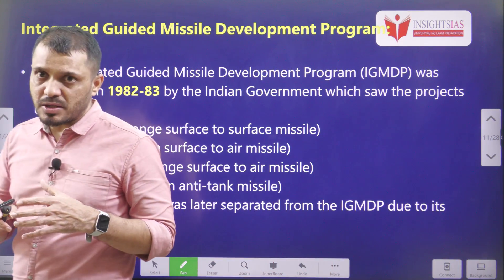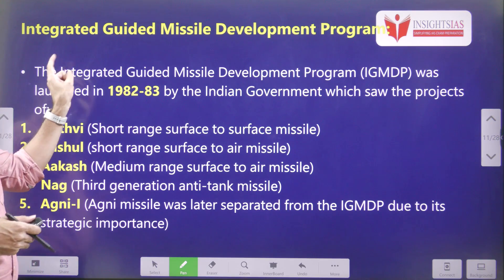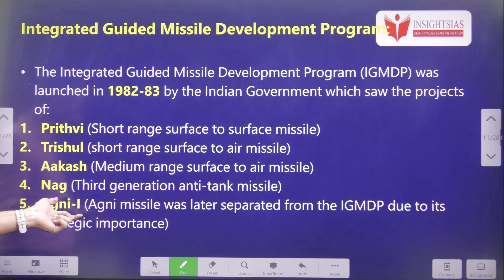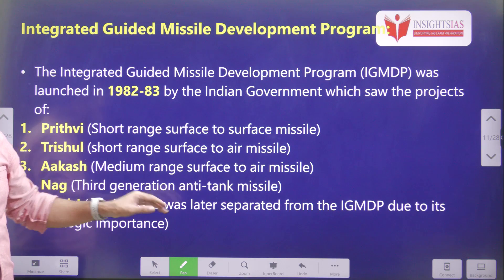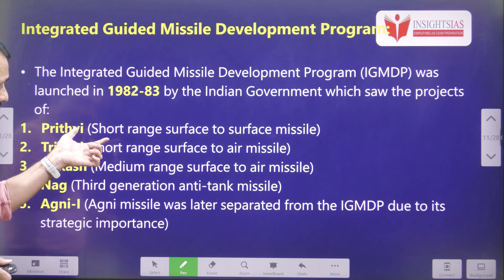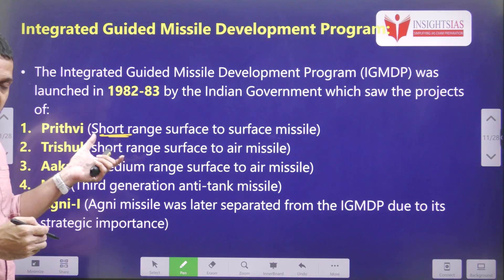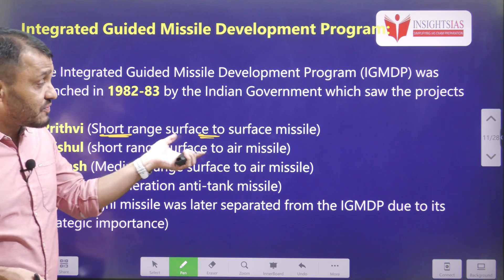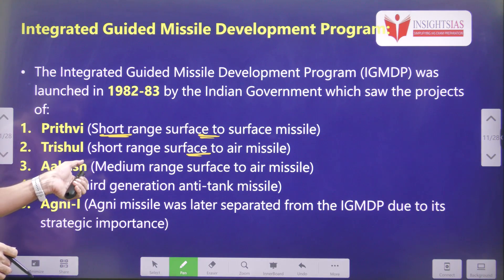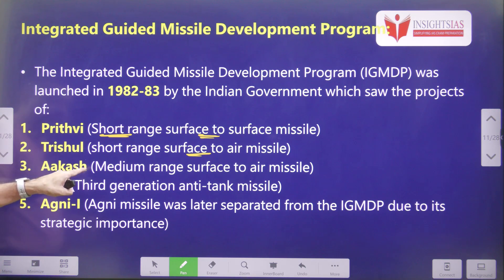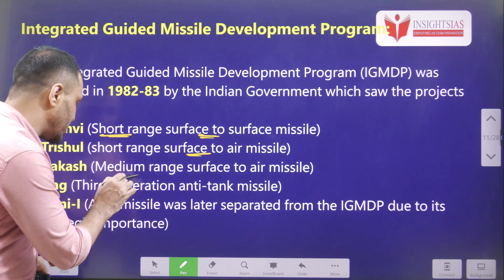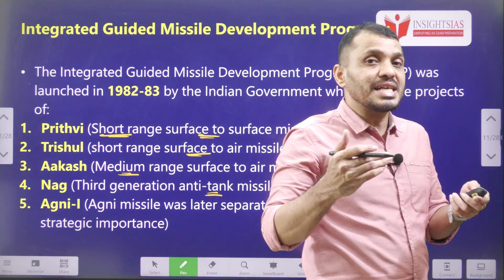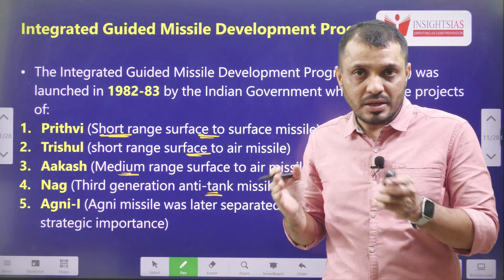India took up a program known as the Integrated Guided Missile Development Program. Under this program, we developed various missiles such as Prithvi, Trishul, Akash, Nag, and Agni. Later, Agni missile development was separated from this platform. Prithvi — meaning Earth — is a short-range surface-to-surface missile. Trishul is also short-range but surface-to-air. Akash is surface-to-air but medium-range, whereas Trishul is short-range. Nag is the anti-tank missile — it can destroy missiles targeting our war tanks.